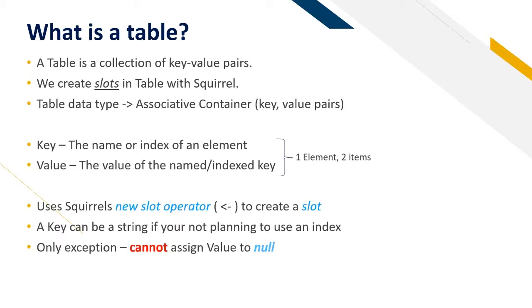Squirrel uses a new slot operator to create a slot. A key can be a string if you're not planning to use an index. The only exception is you cannot assign a value to null.